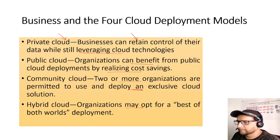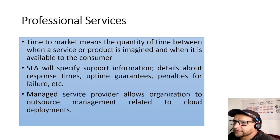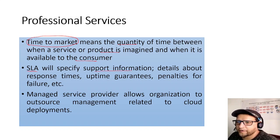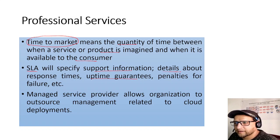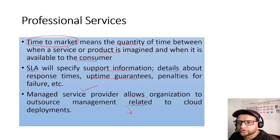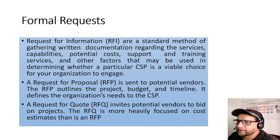Hybrid cloud lets organizations take advantage of the best of multiple deployments. Time to market is the quantity of time between when a service or product is imagined and when it's available to customers — cloud reduces this time significantly. An SLA specifies support information including response time, uptime guarantee, and penalties or credits. A Managed Service Provider allows organizations to outsource management related to cloud deployment to a third-party.